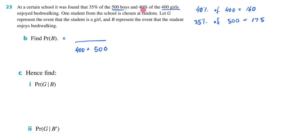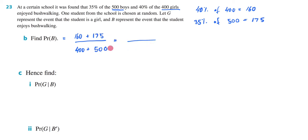We know that 40% of the 400 girls enjoy bushwalking — 40% of 400 is 160. And 35% of the 500 boys enjoyed bushwalking — 35% of 500 is 175. So in terms of total possible outcomes, it's going to be 900, because that's the total population of our school, and the kids who enjoy bushwalking is going to be 160 plus 175, which is 335.